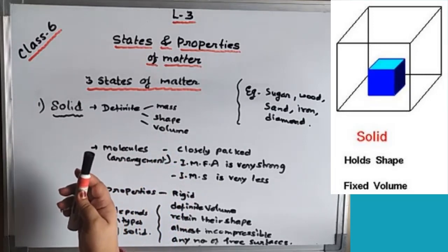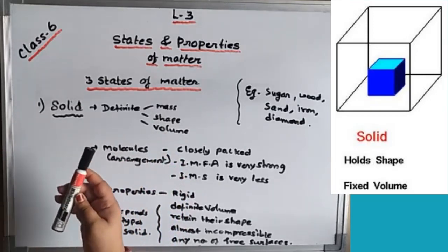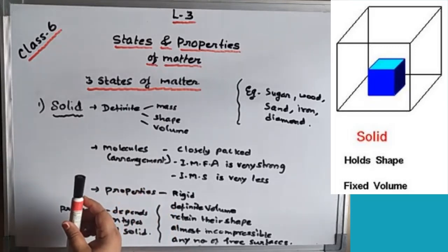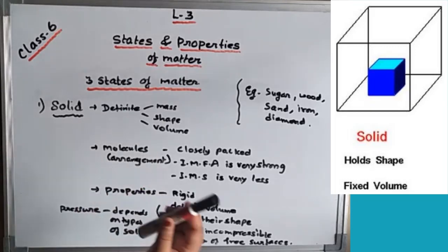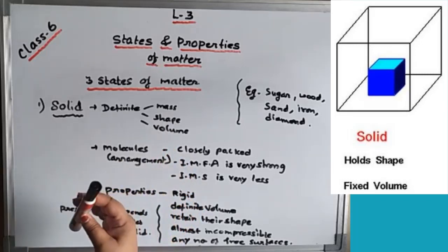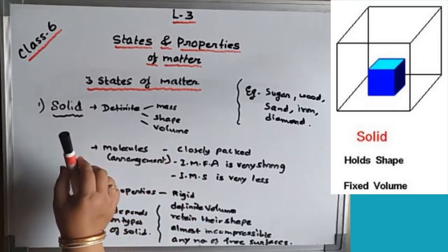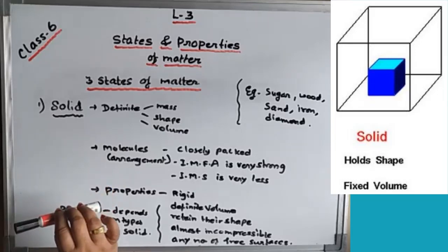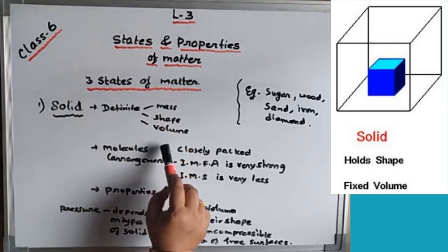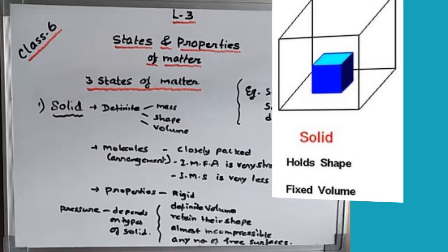Wherever you weigh it, it will weigh the same. Suppose it is 10 grams, it will weigh 10 grams everywhere, wherever you take it in this atmosphere. The shape is also fixed — wherever I keep it, it will have this shape only. So these are made of definite mass, definite shape, and definite volume.